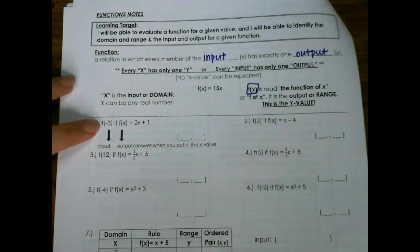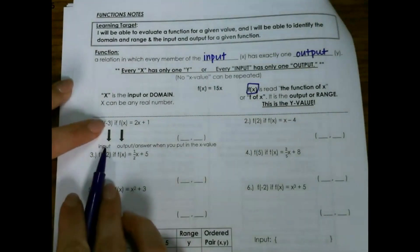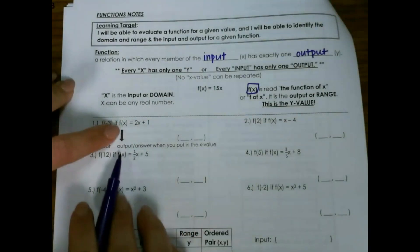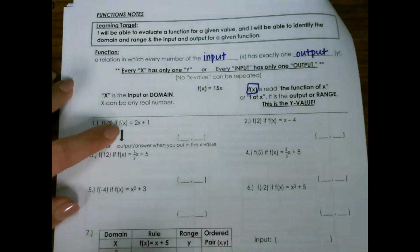For our first one, it says f of negative 3 if f of x equals 2x plus 1. Where this f of negative 3, negative 3 is the input, f of x is the output, or the answer that we get.